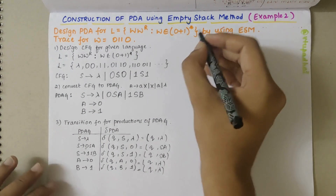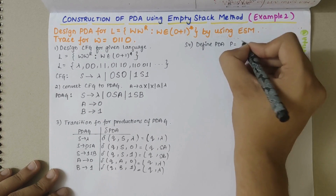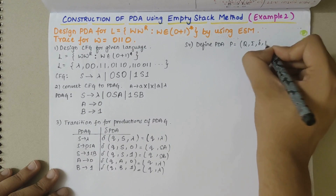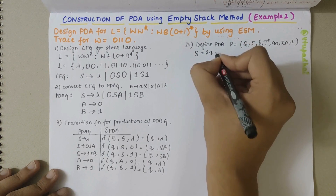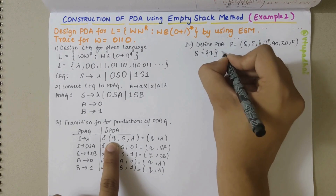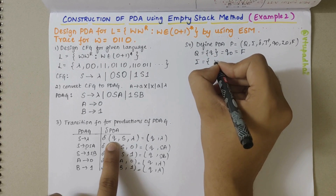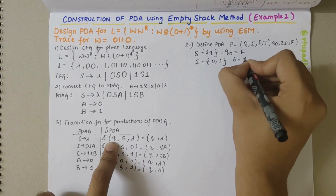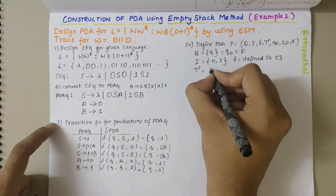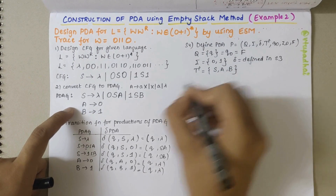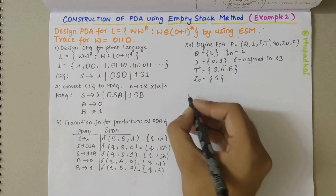My fourth step is to formally define the PDA. P = (Q, Σ, Γ, δ, q0, Z0, F) where Q = {Q} (only one state, which is both the start and accepting state), Σ = {0, 1} (input alphabets), δ is the transition function defined in step 3, Γ = {S, A, B} (stack alphabets), and Z0 = S (the start stack symbol).